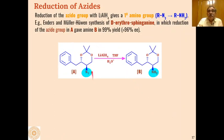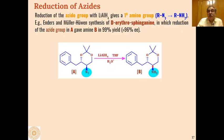Azides are reduced by LAH to give amines as the product. Here also the stereoselectivity of the reactant is maintained throughout the reaction, giving the product in 96% enantiomeric excess and 99% overall yield.